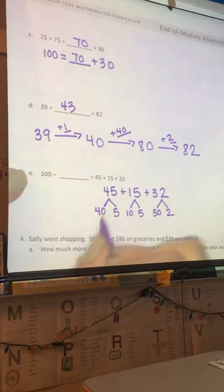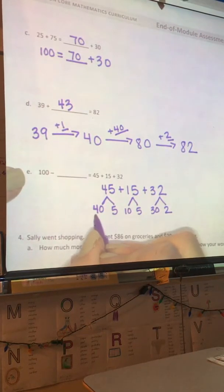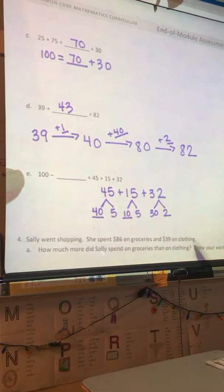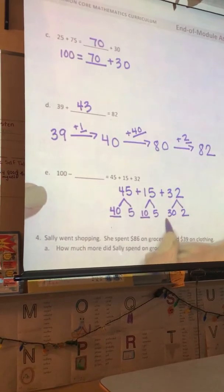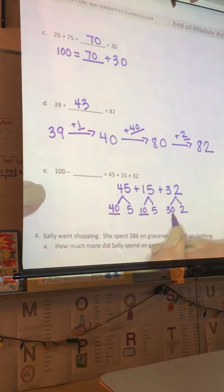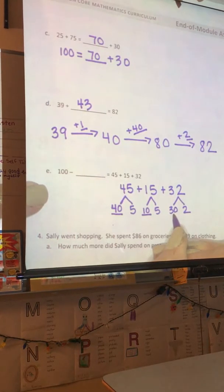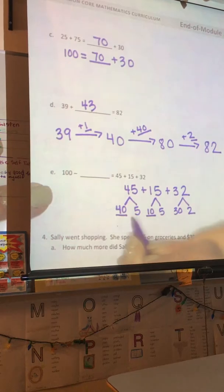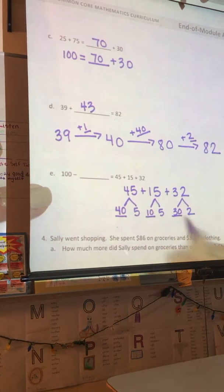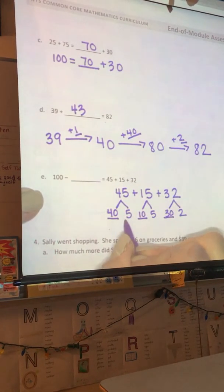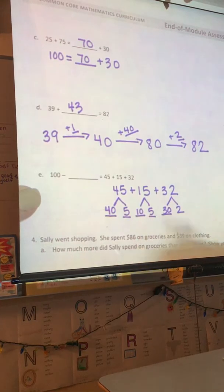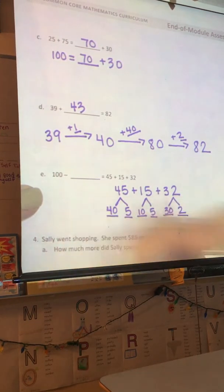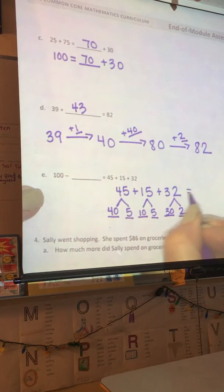Now, I'm going to add my 10s together. 40 plus 10 is 50. And 50 plus 30 can be simplified. 5 plus 3, which is 8. So, 50 plus 30 is 80. Now, I'll add my 1s. 85, 90, plus 2 is 92. So, 45 plus 15 plus 32 equals 92.